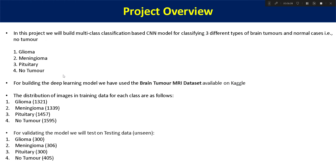For building this deep learning model we will be using a brain tumor MRI dataset that has a very good number of images. As you can see the distribution of images we will use for training our model — glioma has around 3021 images, another class has 3039, another 3037, and normal has around 2500. So we have a significantly good number of images for all the classes.